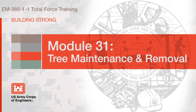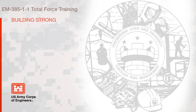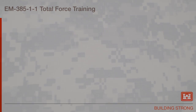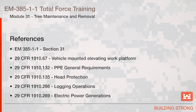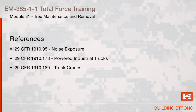Section 31, Tree Maintenance and Removal. The references for this section are EM 385, TAC 1, Section 31, and various sections of 29 CFR 1910, as indicated on this slide.